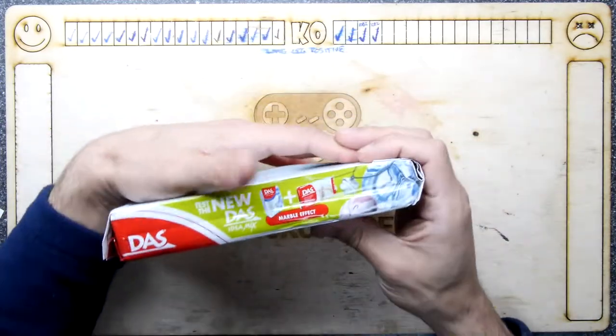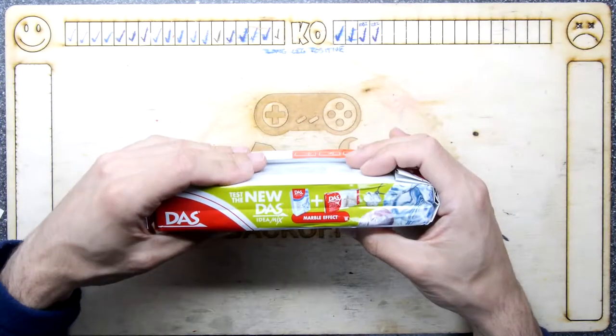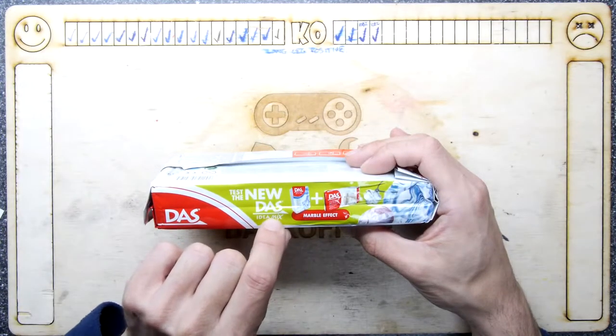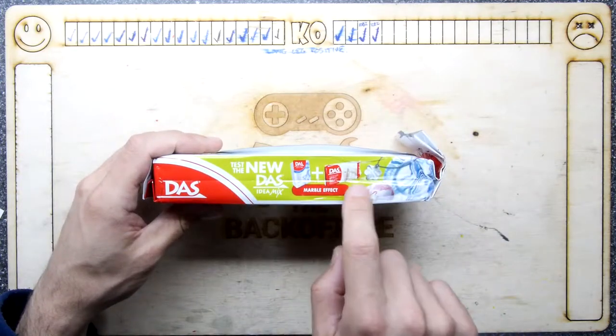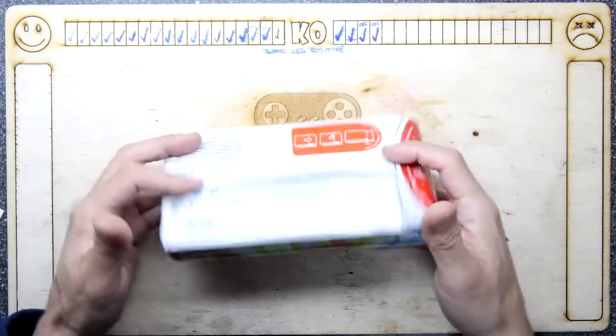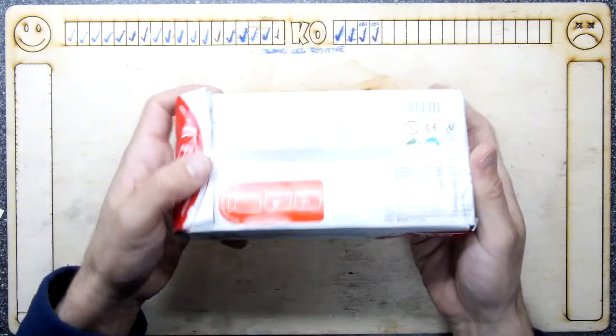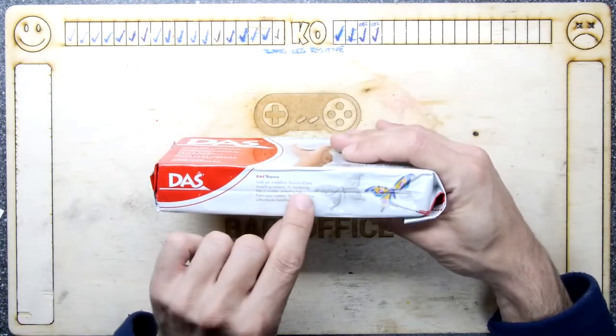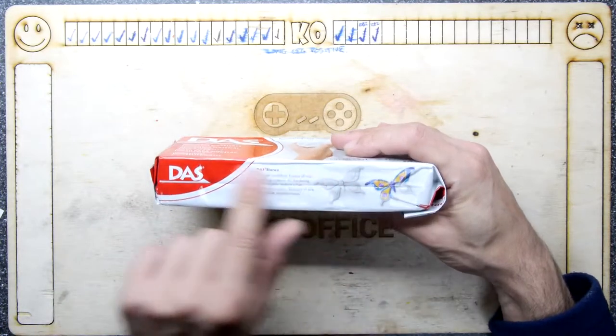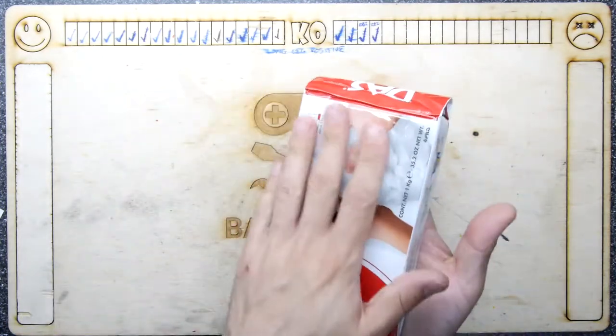What the hell is Idea Mix? Marble effect. I'm just going by this picture because it looks like they're making jewellery by mixing this stuff up. I think it is modelling, air hardening. There you go, modelling material, air hardening. So that's why it comes in a seal. So that's cool.